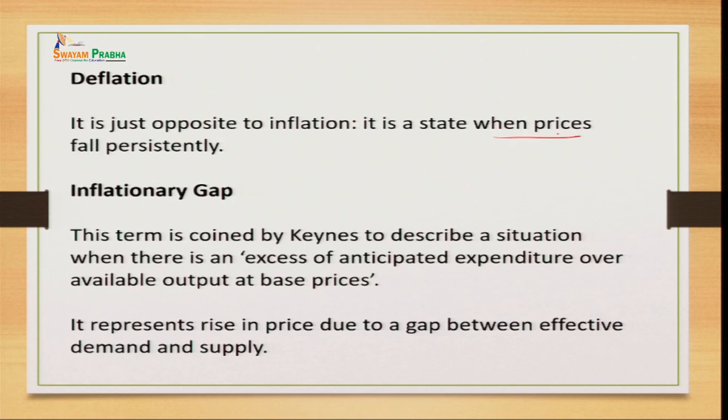Deflation is the opposite of inflation. Inflation is when prices of commodities are increasing because of increase in demand, whereas deflation is a persistent decrease in the price of commodity. During the contraction phase, demand in the economy decreases and the price of commodities also decreases — this is called deflation.